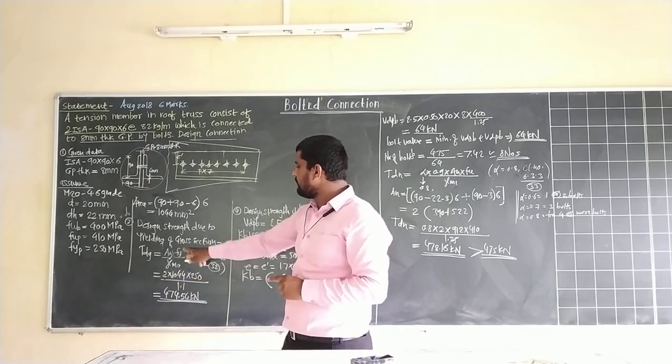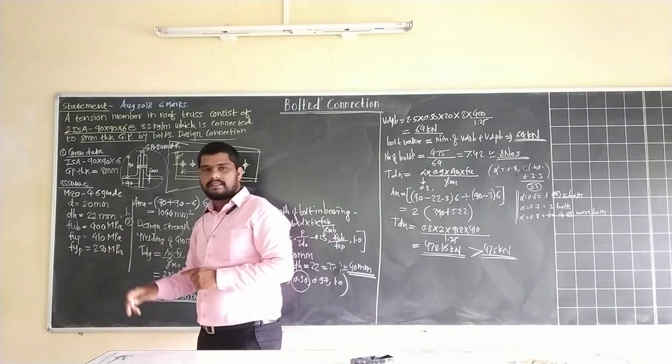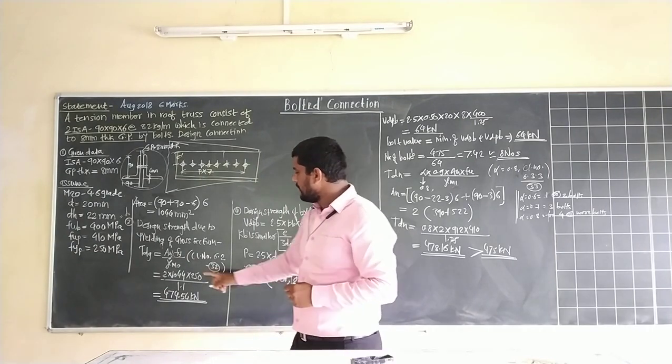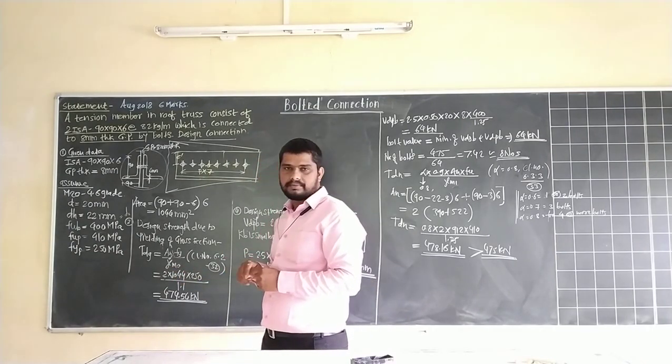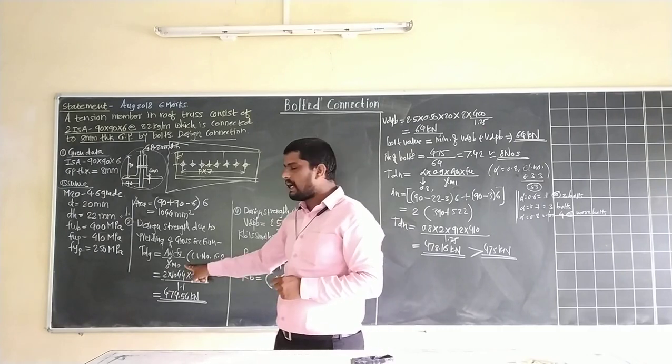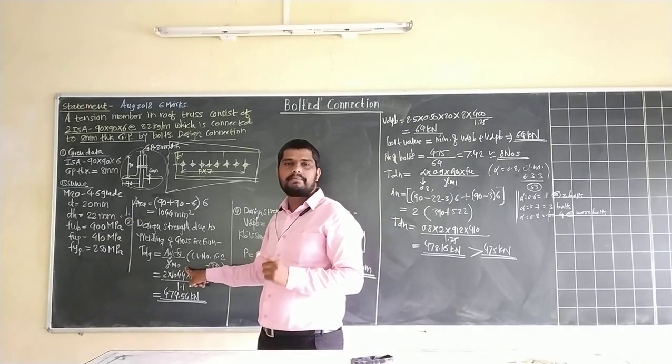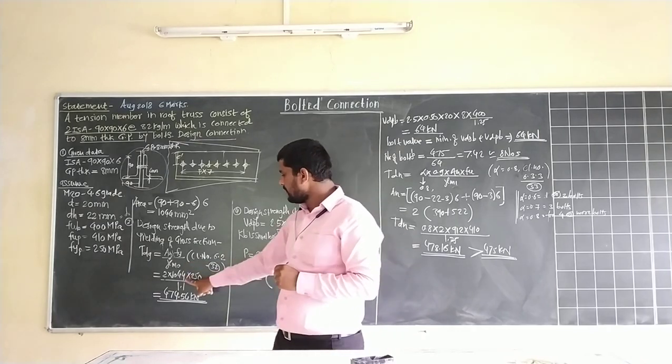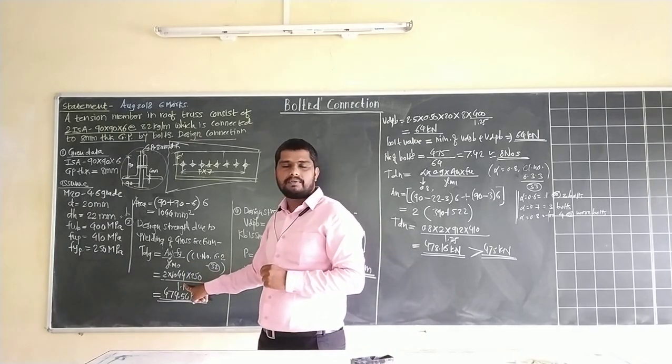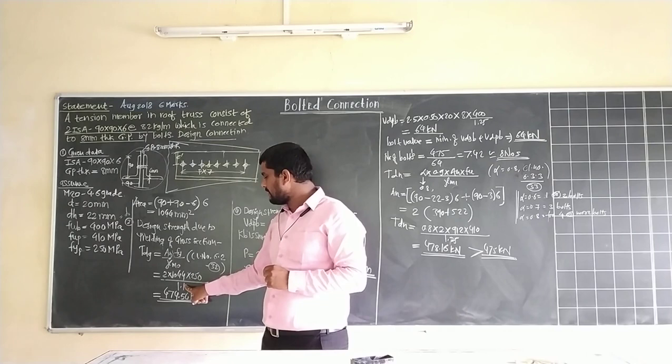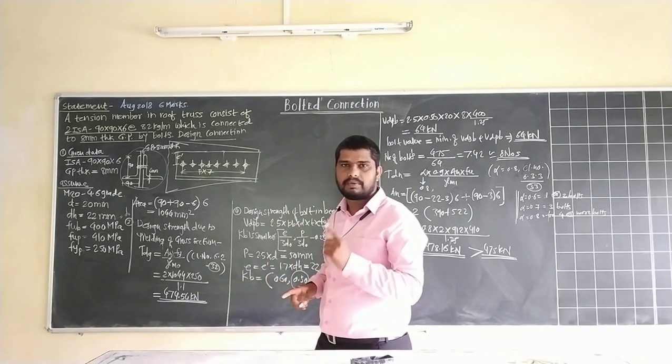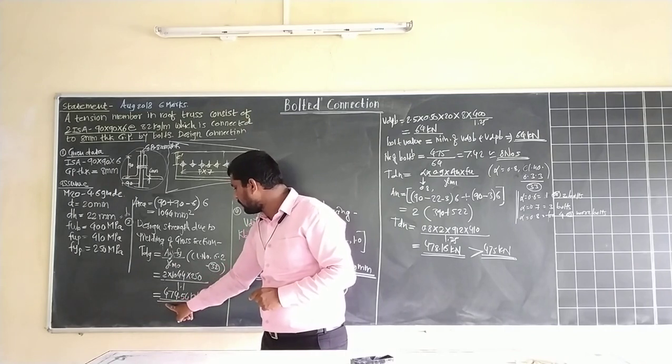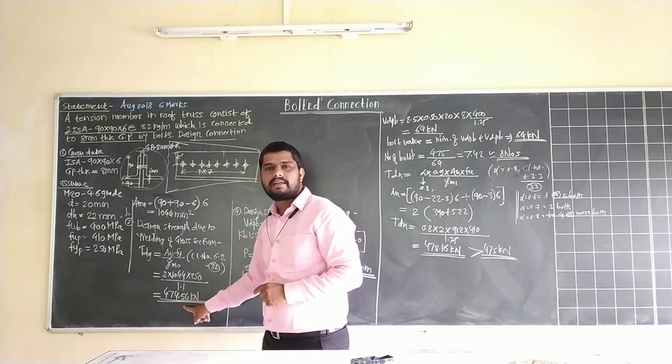Multiply by 250 which is F_Y value, divided by gamma_M0. As per IS 800-2007 table 5 page 30, gamma_M0 value for this connection is 1.1. T_DG equals 474.54 kN.